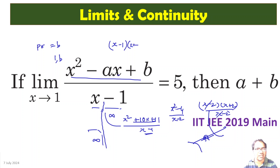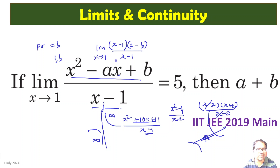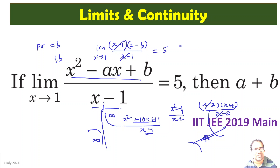So the equation is actually (x - 1)(x - b) / (x - 1). Taking the limit as x tends to 1, after cancelling (x - 1), we get (1 - b). This limit is given as 5, so 1 - b = 5, which means b = 1 - 5 = -4.